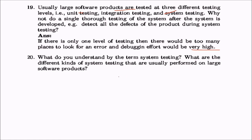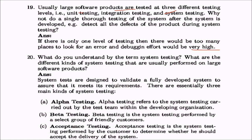What is system testing and what are its different kinds? System tests are designed to validate a fully developed system and ensure it meets its requirements — that it conforms to the SRS. There are essentially three main kinds: alpha testing, carried out by the testing team within the development organization itself; beta testing, performed by a group of friendly customers, possibly at their locations; and acceptance testing, performed by the customer to determine whether to accept the delivery.